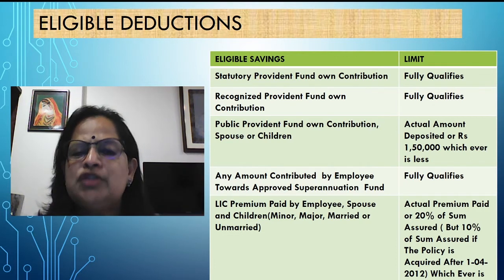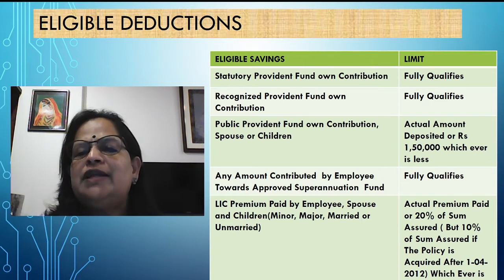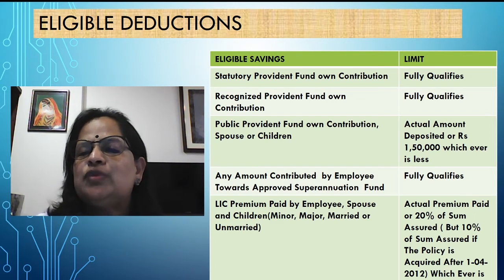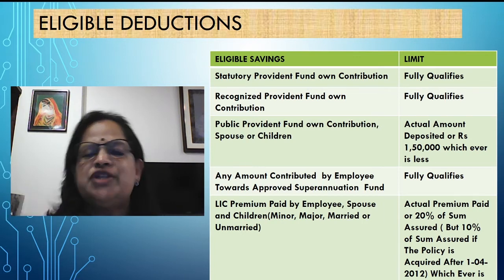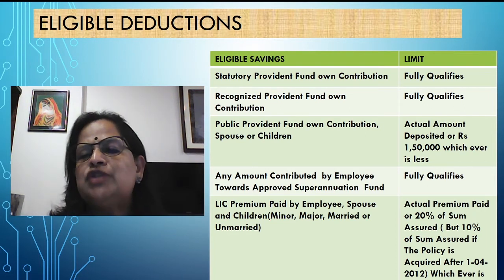Next is any amount contributed by the employee towards an approved superannuation fund. Approved superannuation fund is your pension benefit after retirement — salary will be over when you retire, so after that you will get some pension. Any pension benefit the employee is contributing will fully qualify. Next is LIC premium paid by the employee — here also family members are included: spouse and children, whether minor, major, married, or unmarried. Any category of children can claim the exemption.